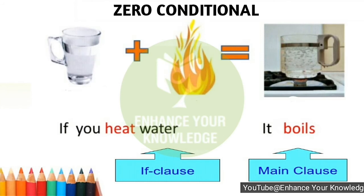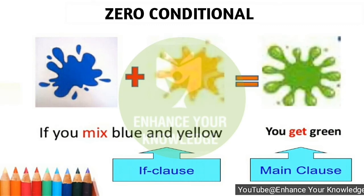For example: 'If you heat water, it boils.' The condition always has the same result — it's a universal truth, a law of nature that is true 100% of the time. It's a simple cause-and-effect relationship. The boiling of water is presented as a consequence of heating it on every occasion. This is a consequence independent of time — a general truth based on physical law. That's why zero conditional is also called the factual conditional. Another example: 'If you mix blue and yellow, you get green.'